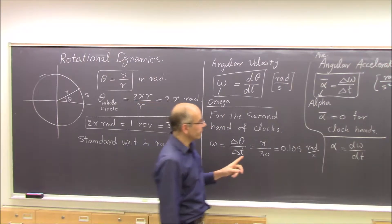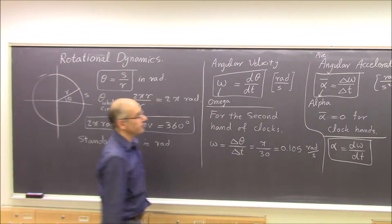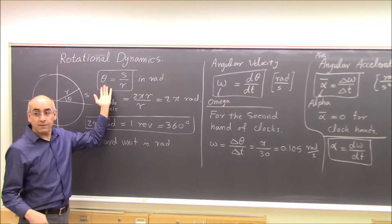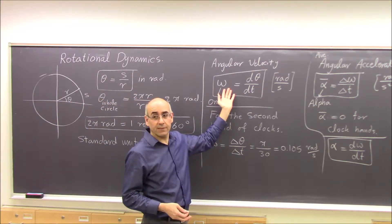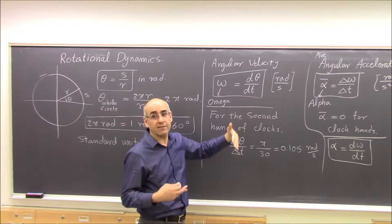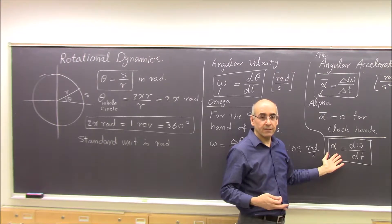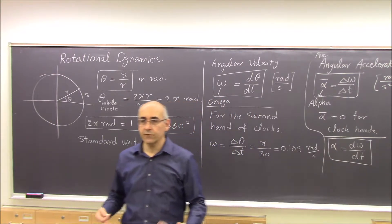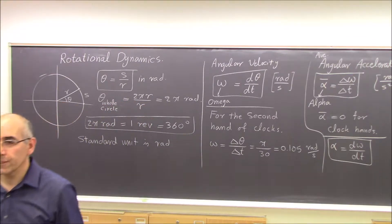These formulas look very similar to the linear case. We had position x, velocity dx/dt, and acceleration as the rate of change of velocity. It is all the same structure — angular quantities mirror linear quantities directly.